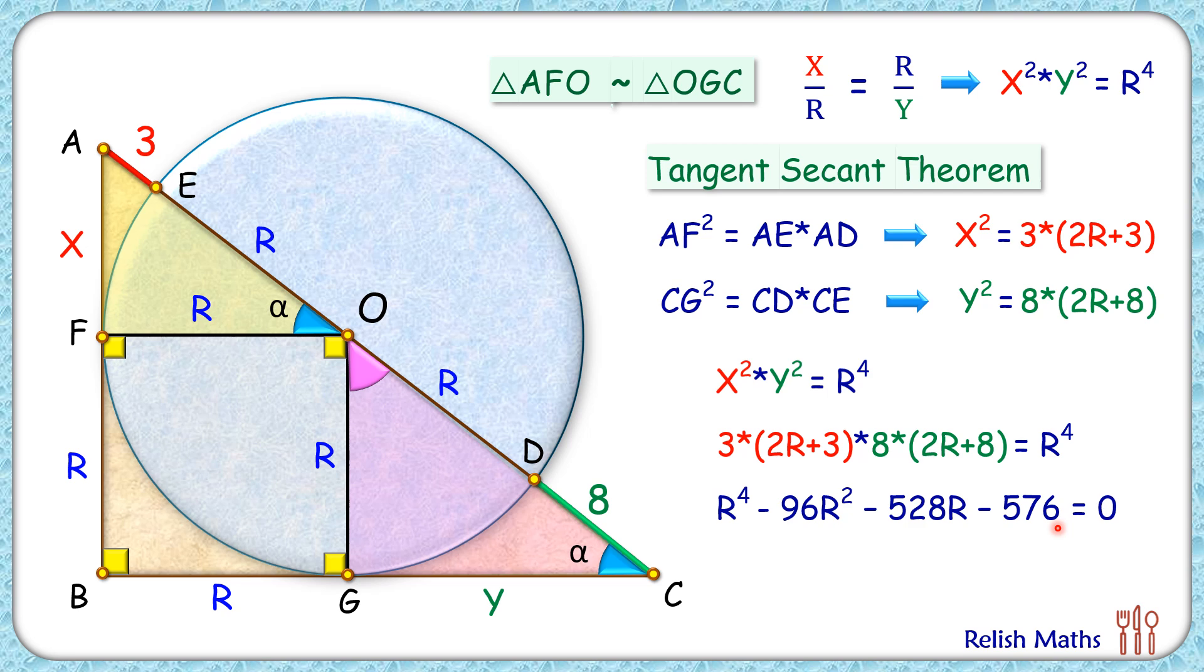Let's write down the factors of 576. These are factors of 576, but R cannot be negative, so we'll try positive values of these factors in the equation and see which value satisfies it. Upon trying, we'll find that R is coming as 12 centimeters, and that's our answer.